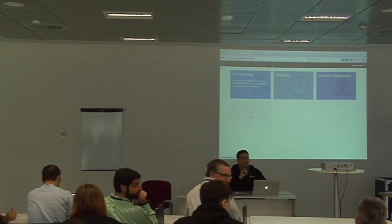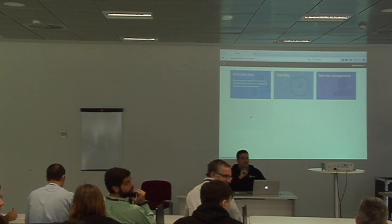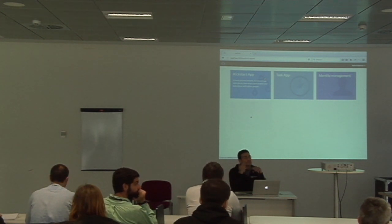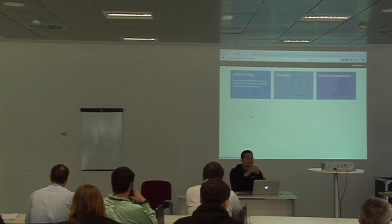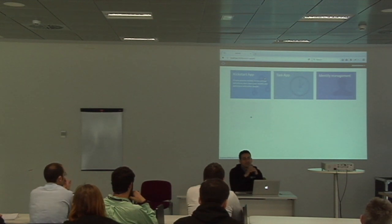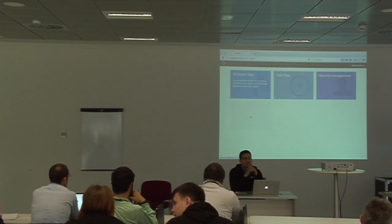That looks a little bit familiar to the enterprise version of Activity, and I saw there are a lot of things missing that are already in the enterprise. How did you make those decisions — what comes into the community version and what doesn't?